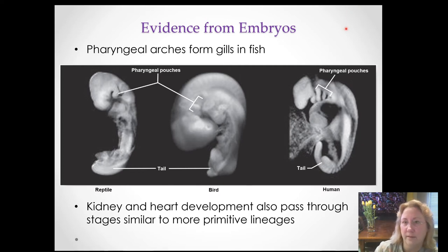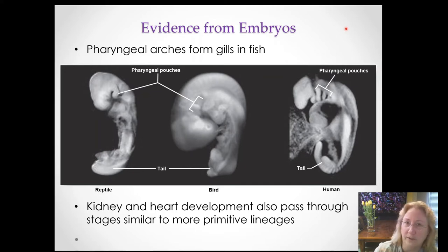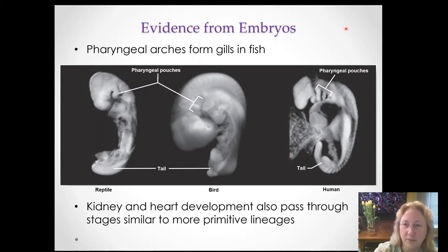Another way we can look at evolution is to compare early stages of different organisms — the embryos. If we compare all vertebrates — although as adults they look very different from fish, reptiles, everything with a bony backbone, including fish, reptiles, birds, mammals, and us — all vertebrates pass through a very similar stage in early development called the pharyngeal arch stage, or the pharyngeal stage.